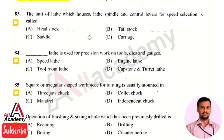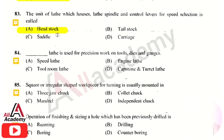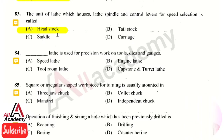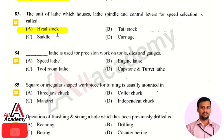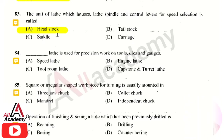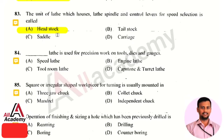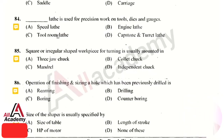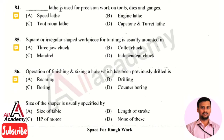The right answer is option 1, that is headstock. A headstock is a non-movable section generally located at the left side of a lathe machine. It consists of the lathe spindle, gear levers, as well as the power on/off button. The next question: which lathe is used for precision work on tools, dies and gauges?